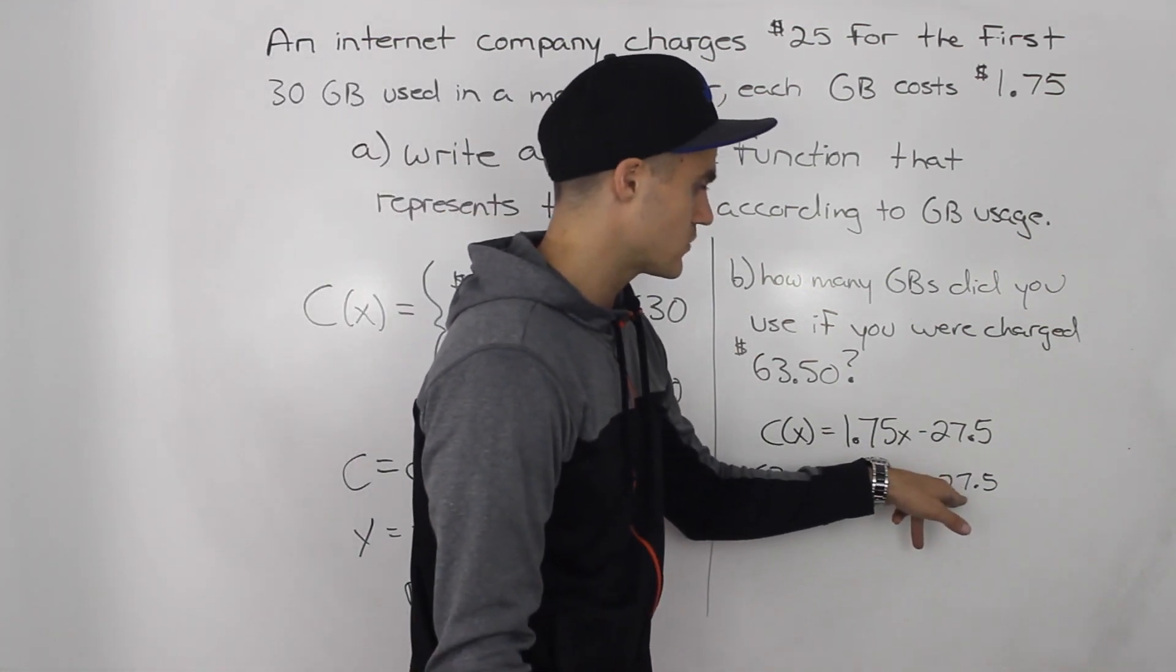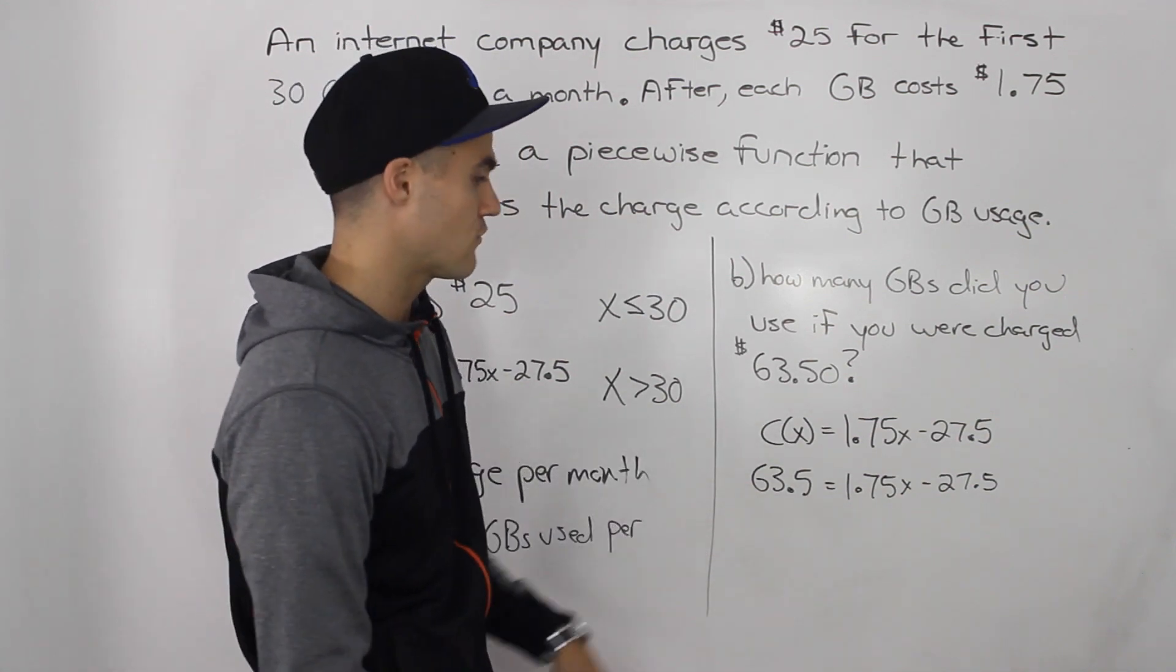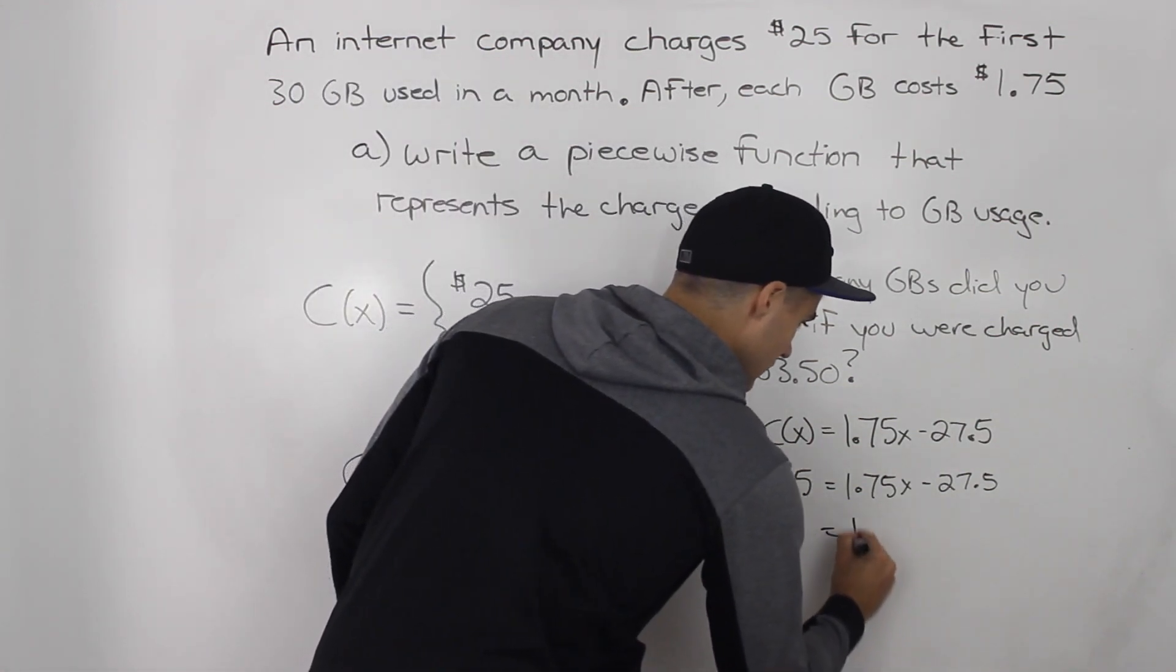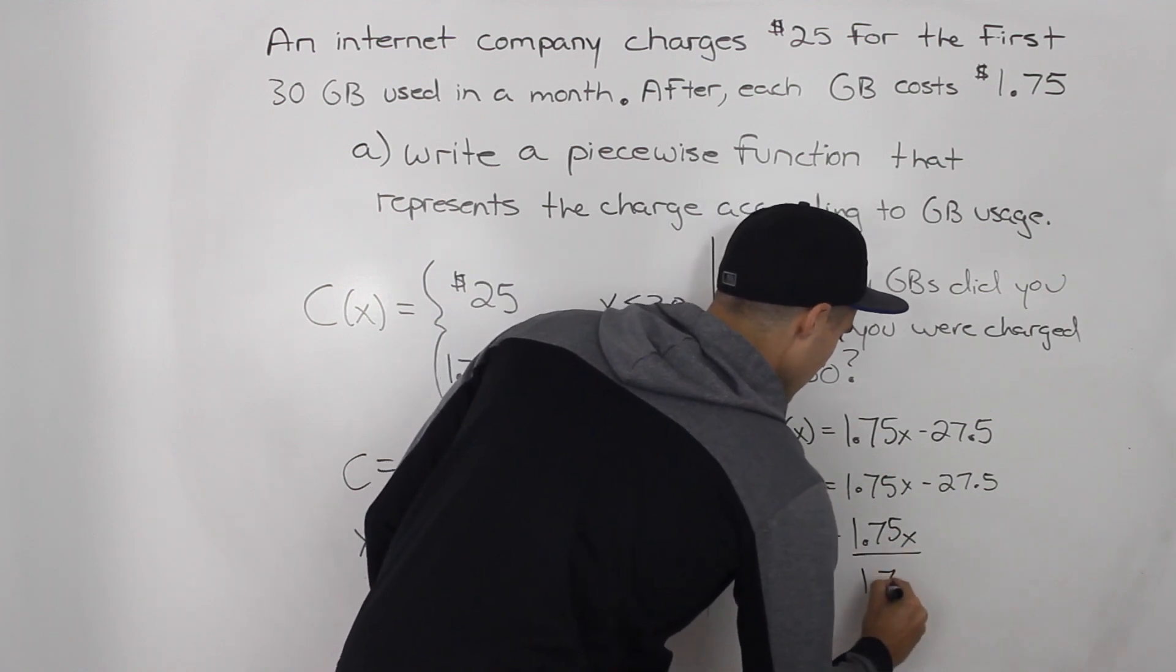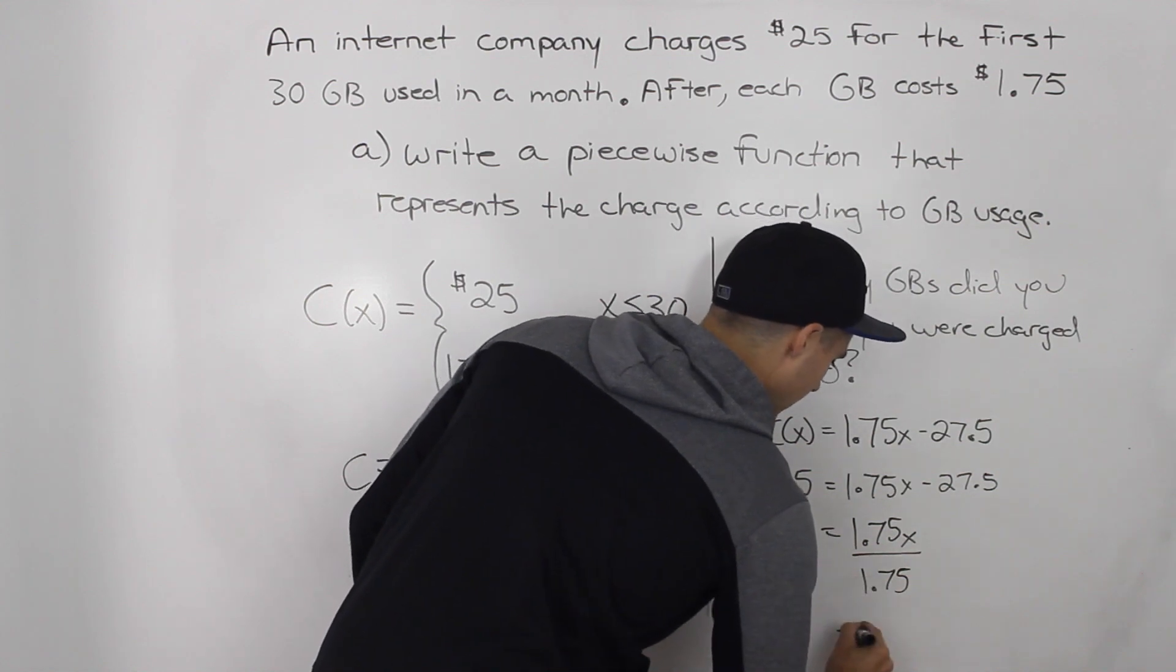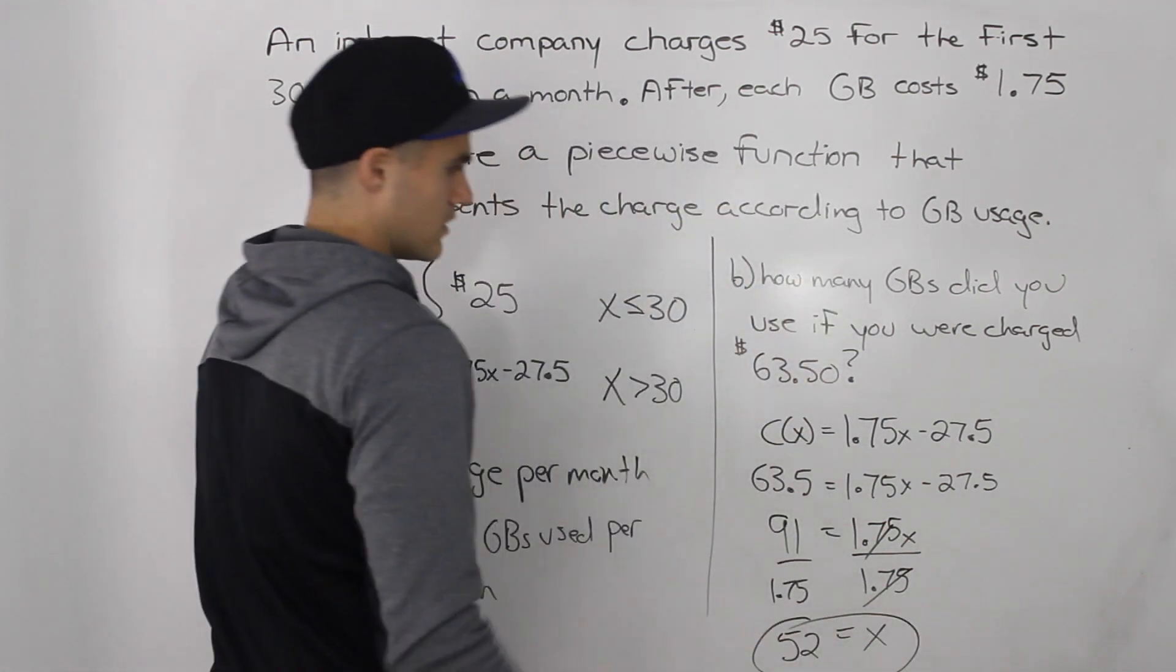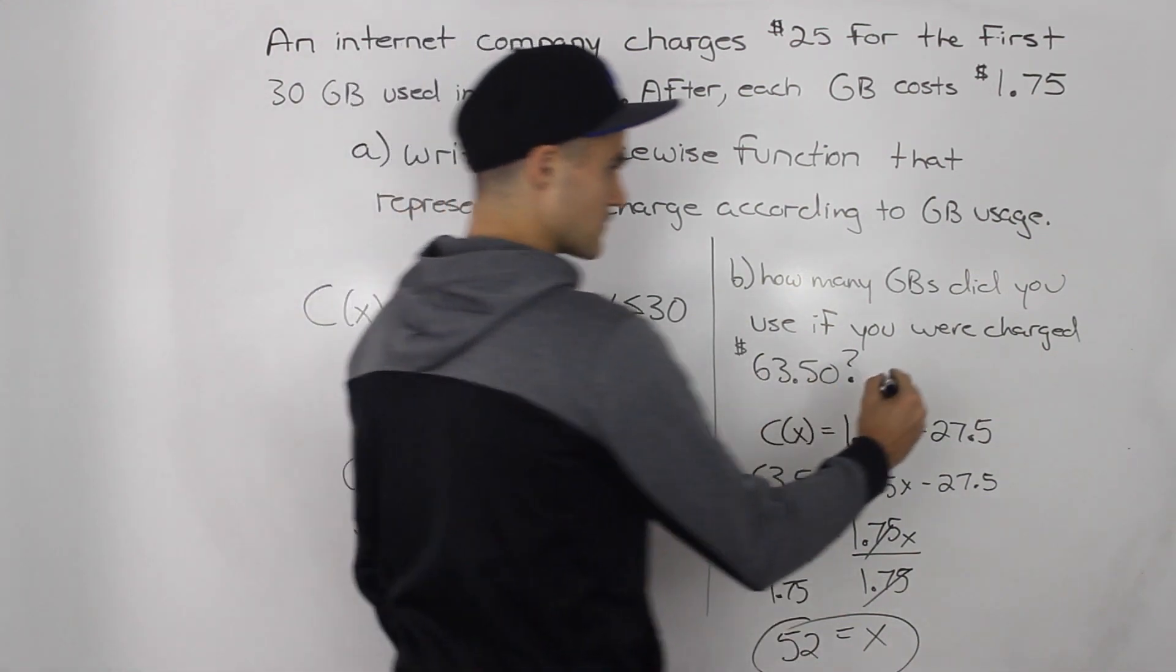So to do that, we would bring this negative 27.5 over to the left side. That would become positive 27.5. 63.5 plus 27.5, that gives us 91. This 1.75 X stays on the right side, divide both sides by 1.75. And these would cancel out and we would end up getting X equals 52.